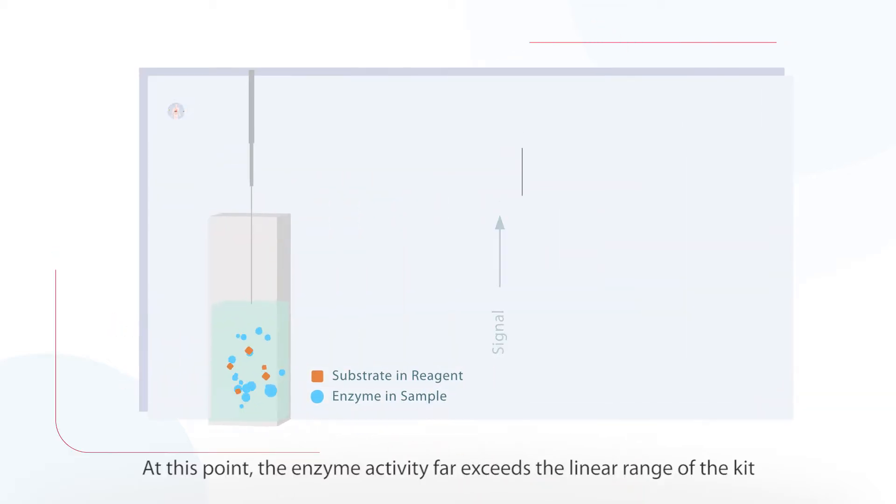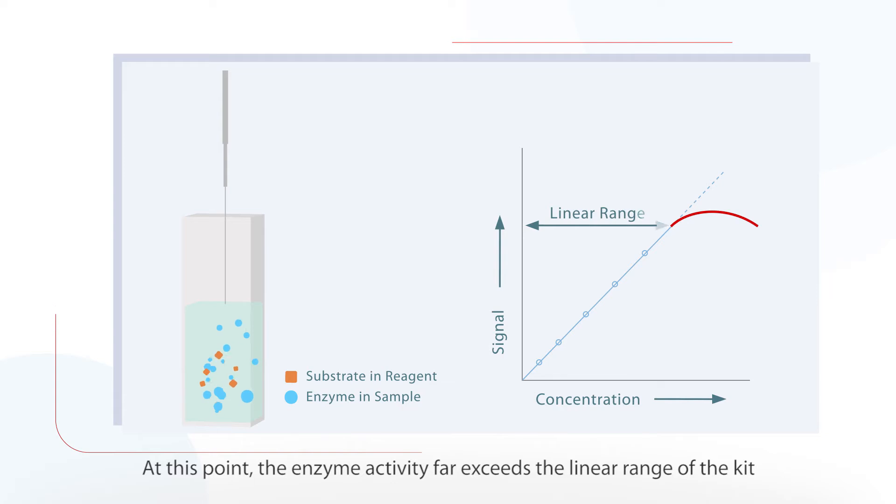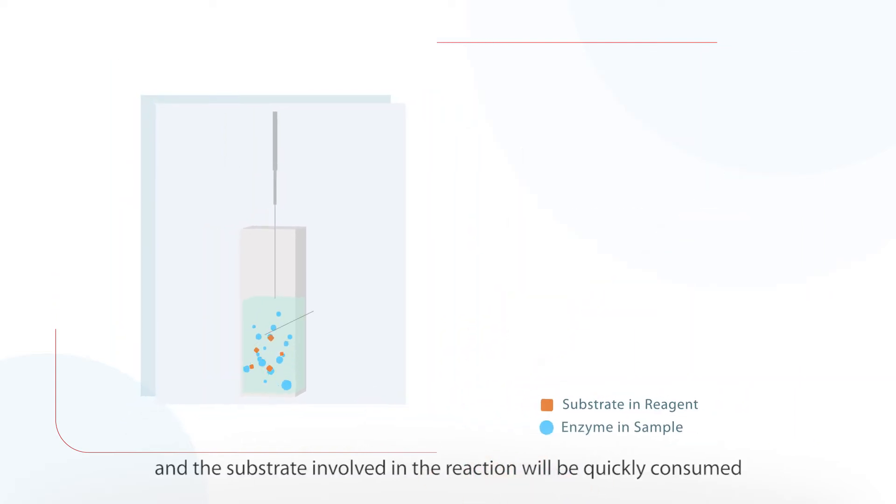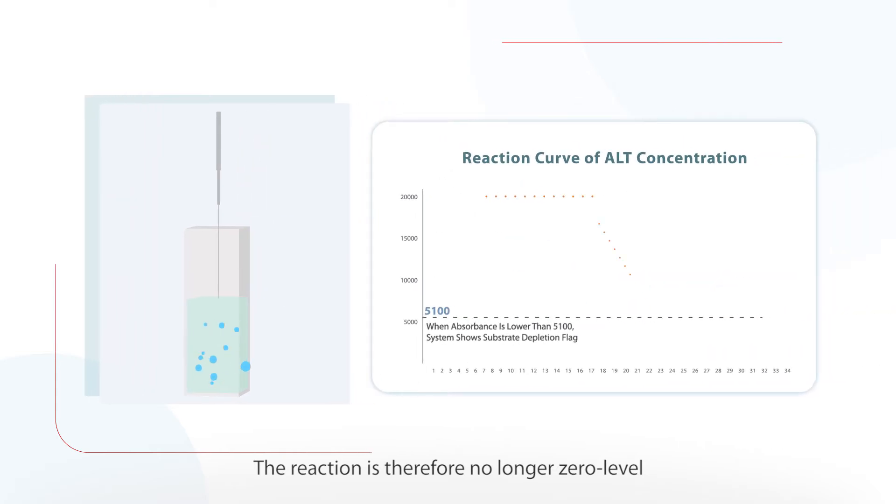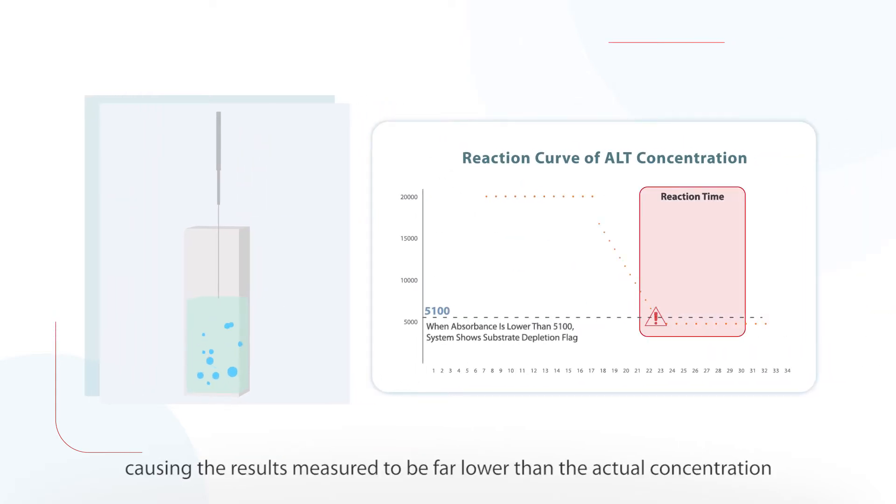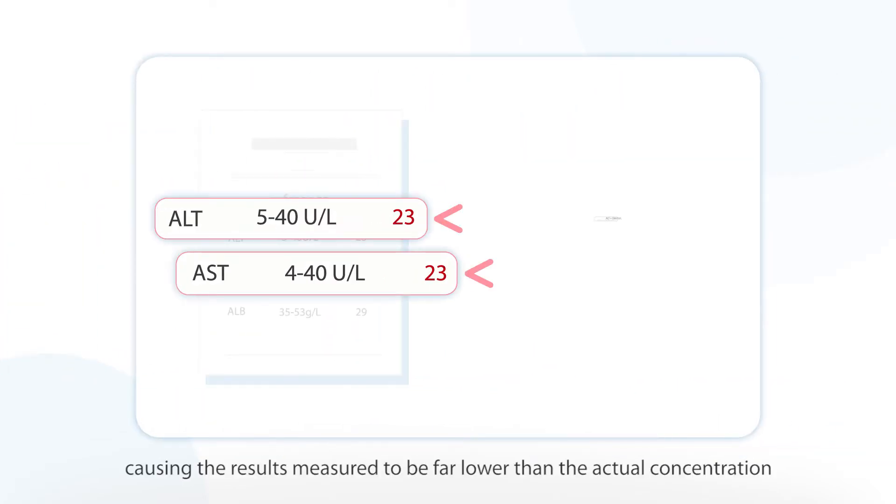At this point the enzyme activity far exceeds the linear range of the kit and the substrate involved in the reaction will be quickly consumed. The reaction is therefore no longer zero level causing the results measured to be far lower than the actual concentration.